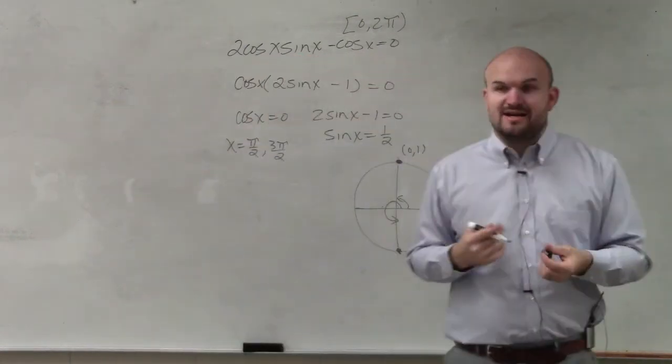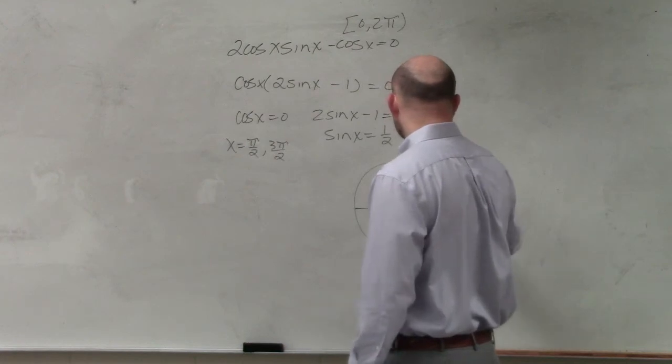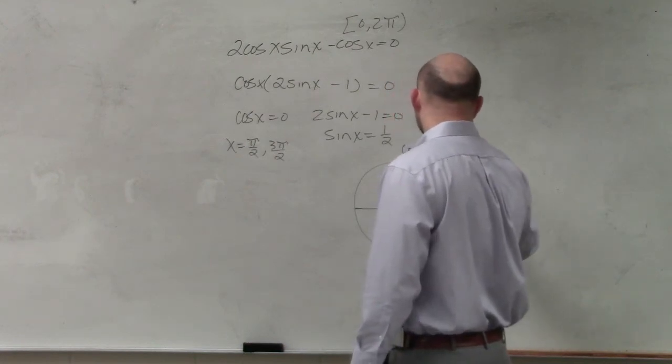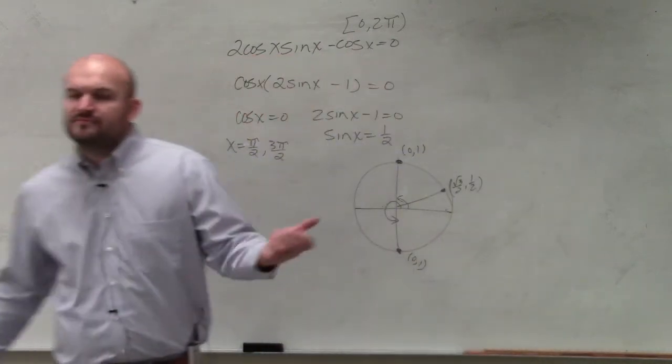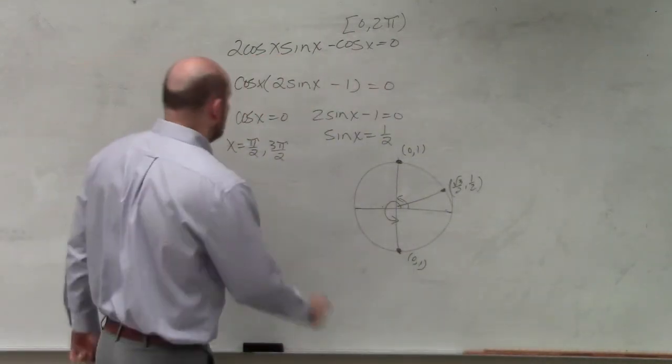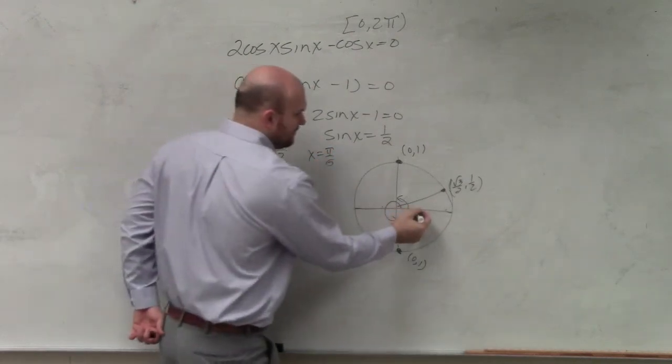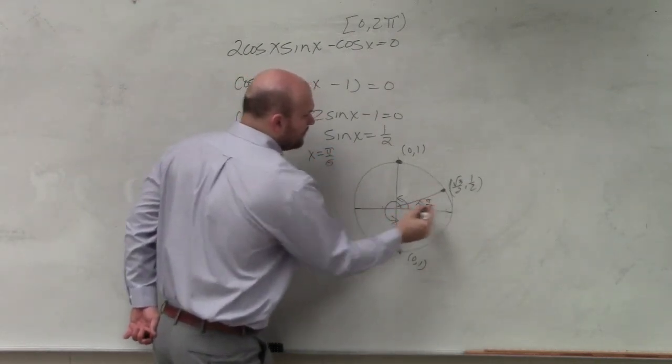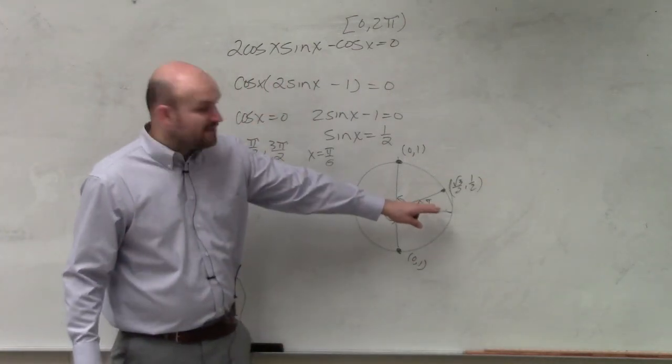Then they're asking us, well, when is sine of x equal to 1 half? Well, I remember on my unit circle here that this point, square root of 3 over 2 comma 1 half, the y coordinate is equal to 1 half. And that angle is going to be pi over 6. But every single time the y coordinate is 1 half is going to be whenever the reference angle is pi over 6.